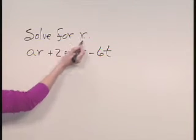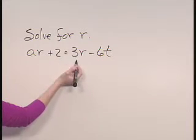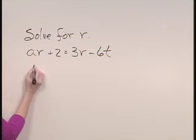Since we're solving for R, we want to get all of our R's on the same side of the equation. So we'll begin by subtracting 3R from both sides.